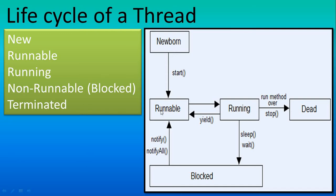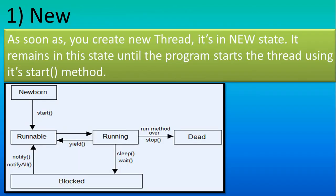The stages are: new born, runnable, running, dead, and block. Now, looking at the new stage in detail — as soon as you create a new thread, it is in the new state, and it remains in this state until the program starts the thread using the start method. In the new born stage, we simply create the thread object. Just creating the thread object is known as the new born stage.